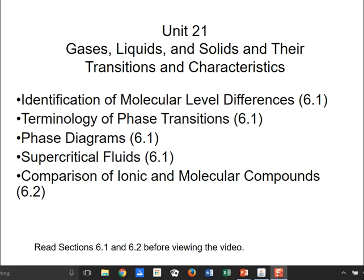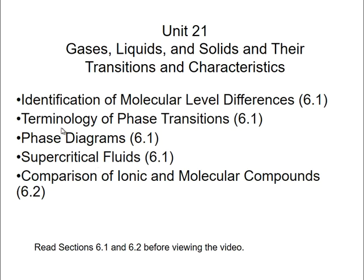Welcome to unit 21. We're going to talk about gases, liquids, and solids — the three primary states of matter — their transitions, and some of their characteristics. This covers sections 6.1 and 6.2. In 6.1, we'll deal with identification of molecular-level differences, terminology of phase transitions, phase diagrams, supercritical fluids, and a comparison of ionic and molecular compounds. You should read sections 6.1 and 6.2 before viewing this video.